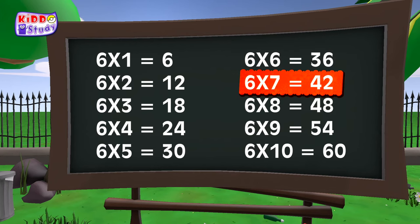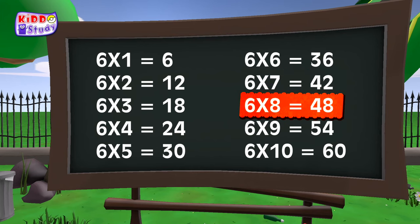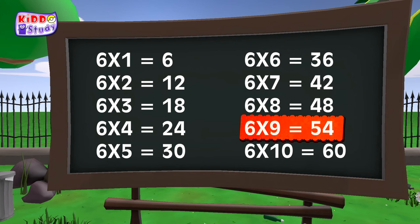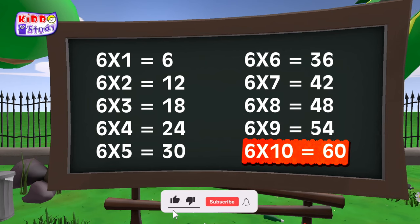Six sevens are forty-two, six sevens are forty-two. Six eights are forty-eight, six nines are fifty-four. Six nines are fifty-four, six tens are sixty.